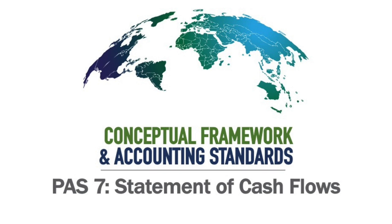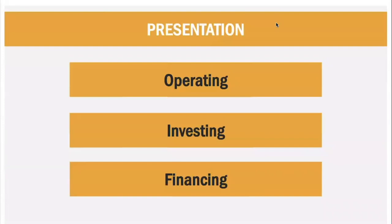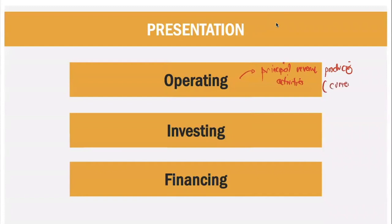So how do we present your Statement of Cash Flows? Under your Statement of Cash Flows, we must divide your items as either operating, investing, or financing. So when do we consider an item as an operating activity? It is considered as an operating activity if it comes from your Principal Revenue Producing Activities. These are your Current Assets and Current Liabilities. So if ever the transaction pertains to your Current Assets or Current Liabilities, it is considered an operating activity.